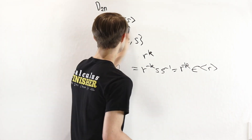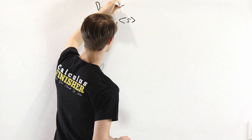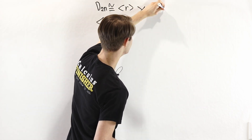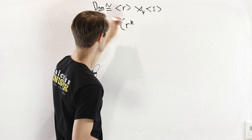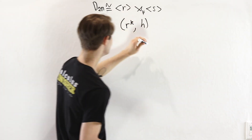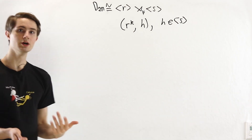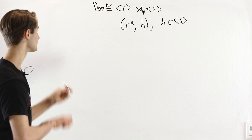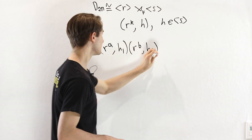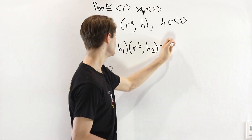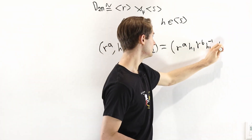We have everything we need to get a semi-direct product of the dihedral group. We can write D₂ₙ as the semi-direct product of ⟨R⟩ with ⟨S⟩. The elements in this semi-direct product are ordered pairs where the first element is in ⟨R⟩ and the second is in ⟨S⟩. Multiplication of (R to the A, H₁) times (R to the B, H₂) equals (R to the A times H₁·R to the B·H₁⁻¹, H₁·H₂).